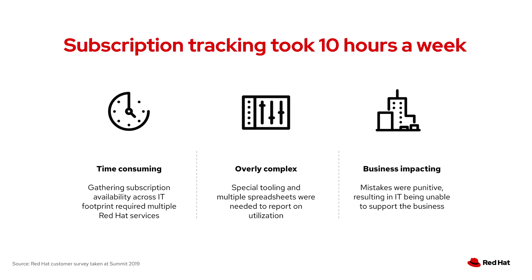When we laid the feedback into three broad categories, these were the three: it was time-consuming, overly complex — some parts of subscription management are necessarily complex, but there are areas where it's also overly complex — and it was business impacting. The penalty for getting subscription management wrong generally means that you can't deploy a system, you can't patch a system, you cannot otherwise support your business.